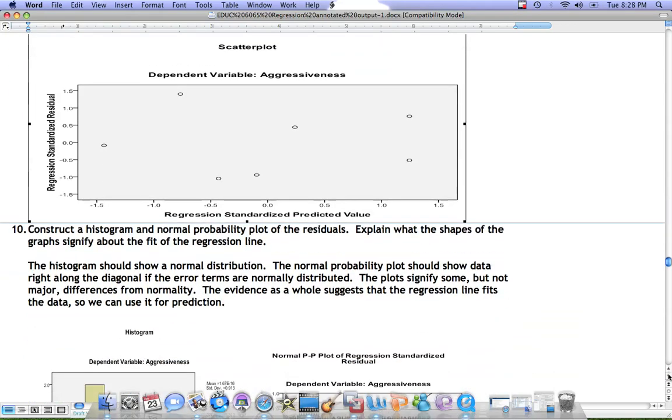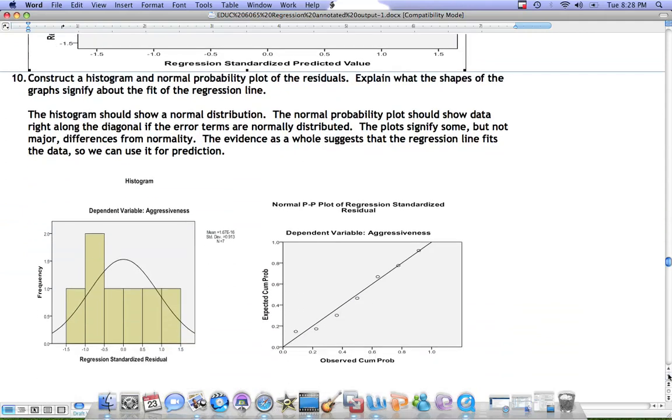Next, we need to make sure that the error terms are normally distributed. We can do that through two pieces of information that SPSS provides. One is a histogram of the residuals and the other is a normal probability plot of the residuals. Looking first at the histogram of the residuals,